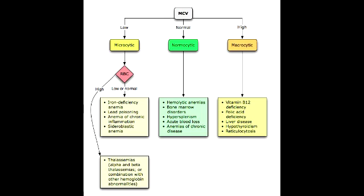Name all the causes of extrinsic hemolytic anemia. The causes of extrinsic hemolytic anemia include autoimmune conditions, microangiopathies, macroangiopathies, and infections, which can all lead to extrinsic hemolytic anemia. So non-hemolytic and hemolytic subdivisions are both part of normocytic anemias.